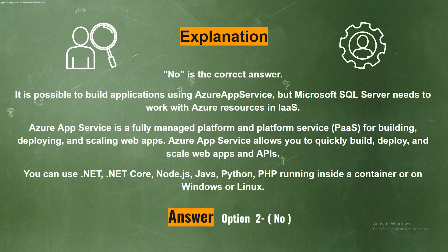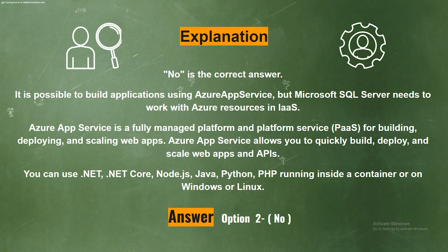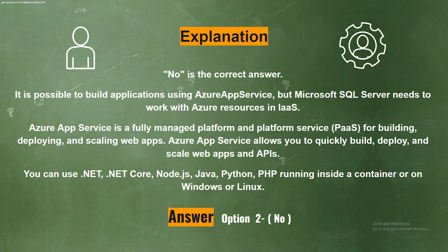Azure App Service is a fully managed platform-as-a-service for building, deploying, and scaling web apps. Azure App Service allows you to quickly build, deploy, and scale web apps and APIs. You can use .NET, .NET Core, Node.js, Java, Python, or PHP running inside a container or on Windows or Linux.